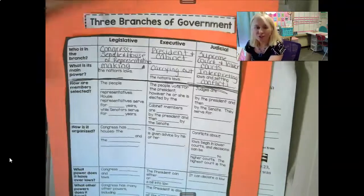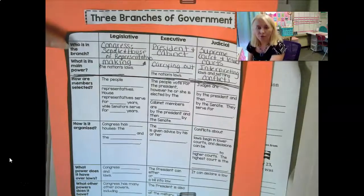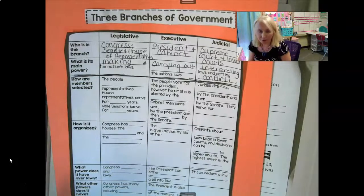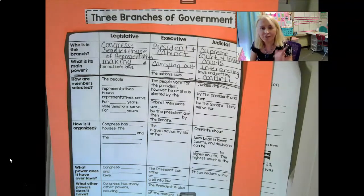So they're checking each other's power. Nobody has all the power — it's shared. This was the idea of somebody.